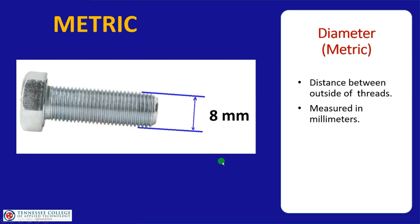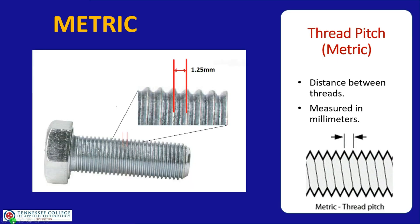For metric bolts, we measure diameter the same way — on top of the threads, not in the thread grooves. The only difference is we'll have a metric measurement instead of a fractional one. In this case, if we measure it, the bolt is eight millimeters. Don't make the mistake of measuring between the threads.